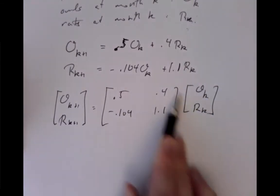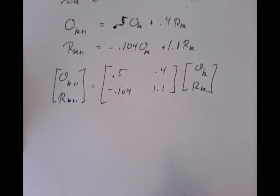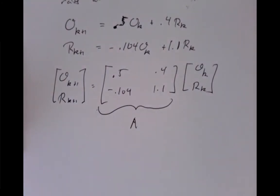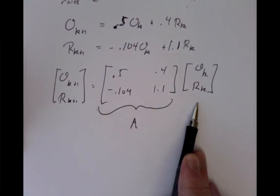So we get a matrix here. So we can think of this as being a matrix which we'll call A. And we want to understand the long-term behavior of the population.